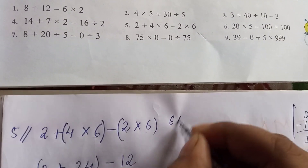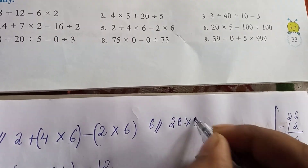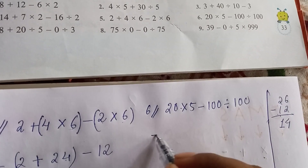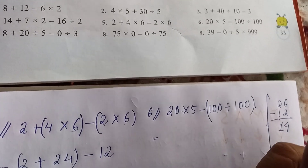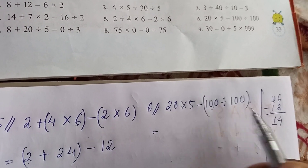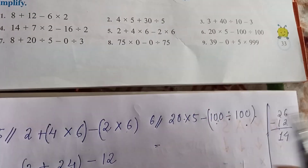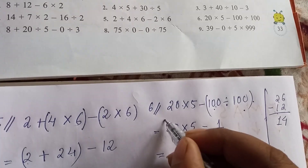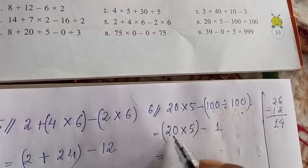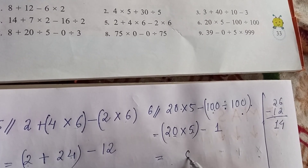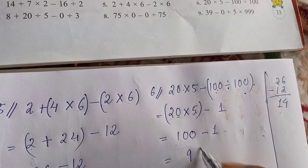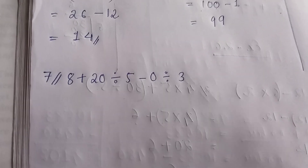Question number 6: 20 into 5 minus 100 divided by 100. First division: 100 divided by 100. When a number is divided by itself the answer is always 1, so we get 25 minus 1. Then multiplication: 20 into 5. 2 times 5 is 10, so 20 into 5 equals 100. Then 100 minus 1 equals 99.